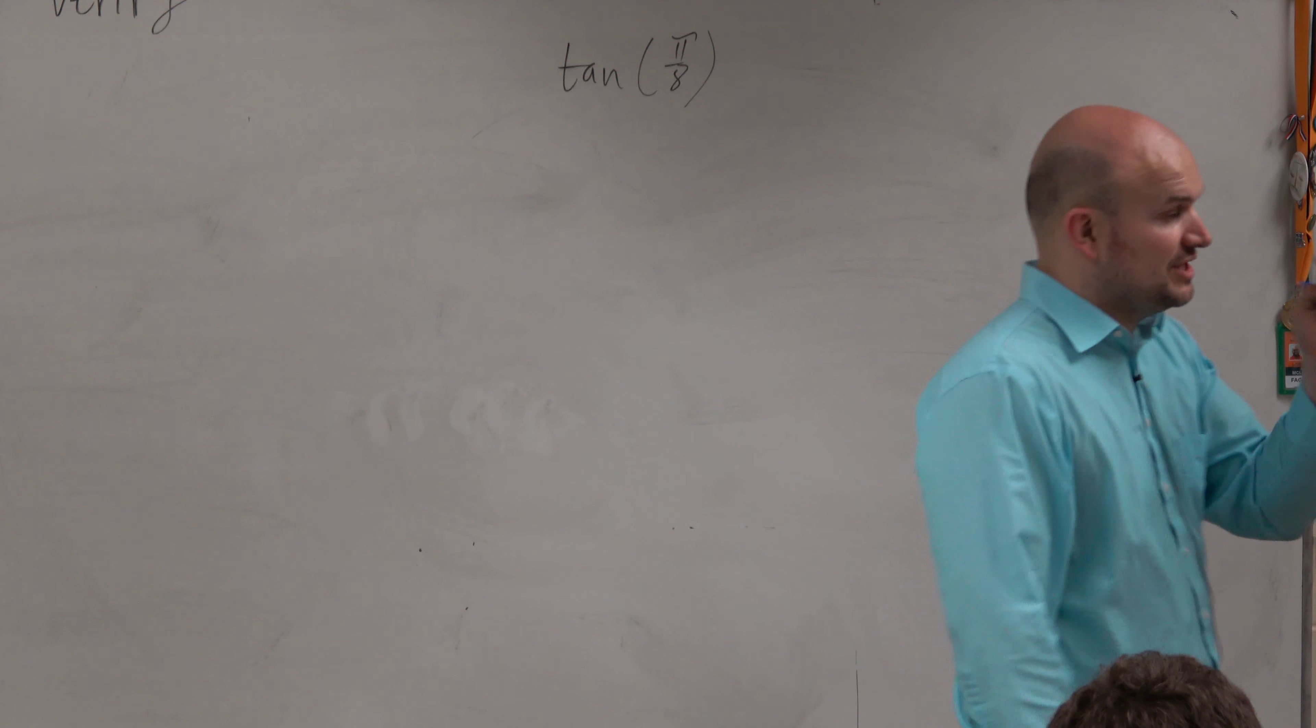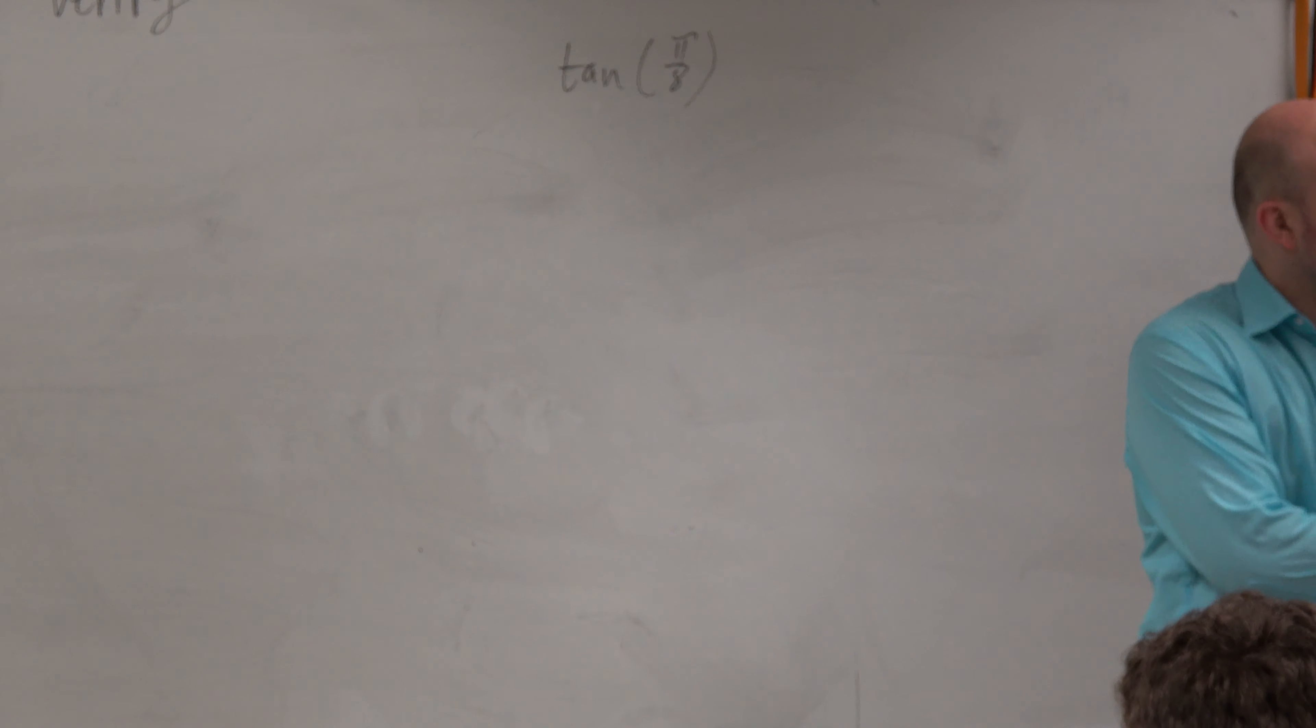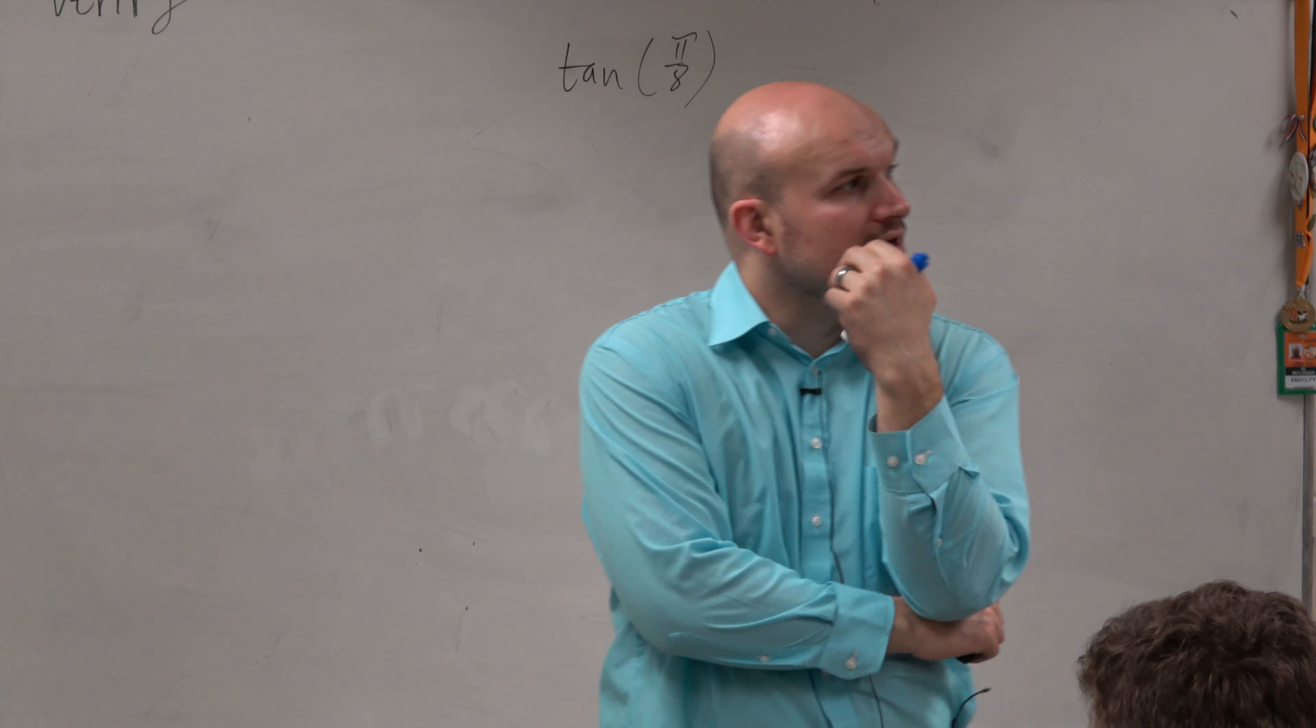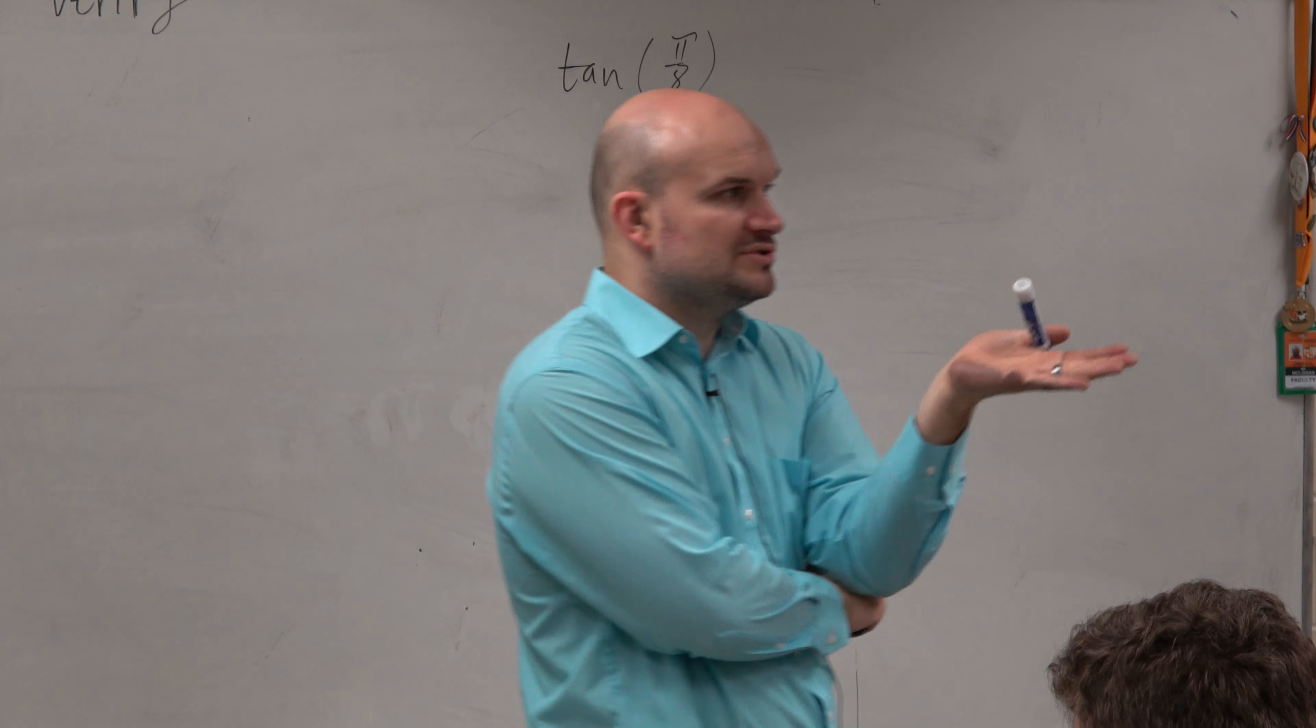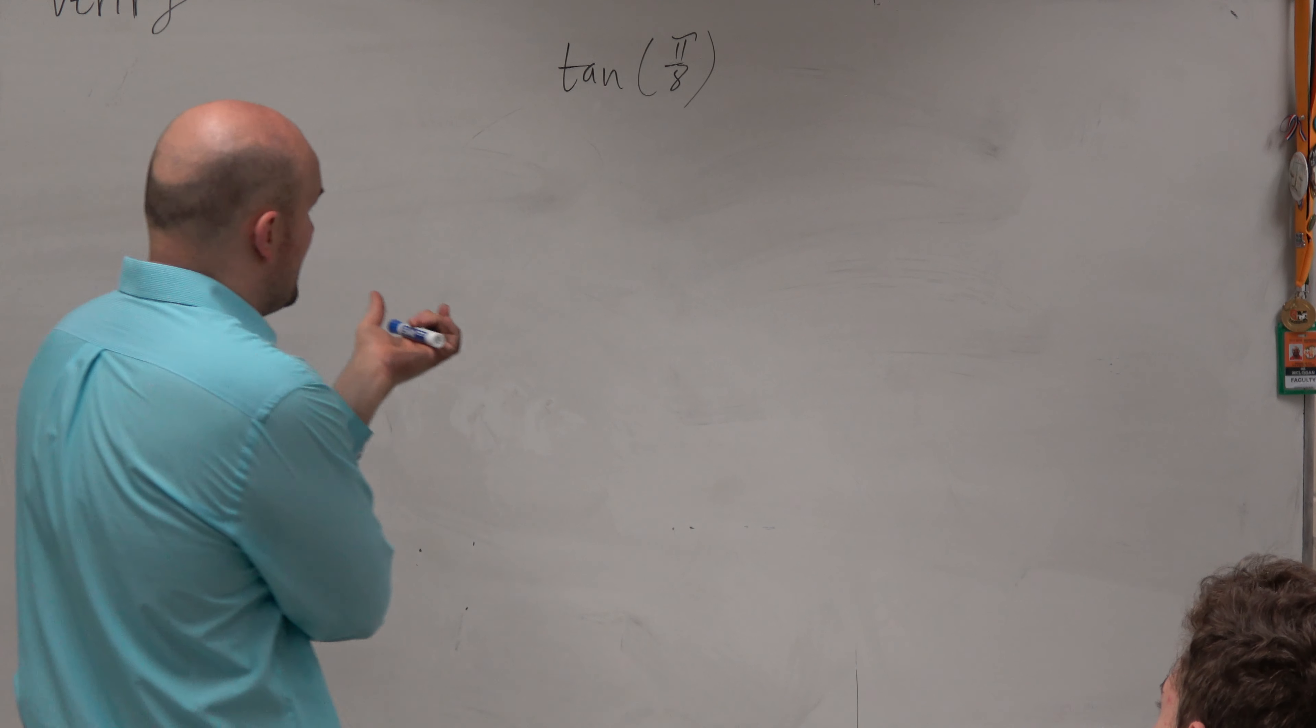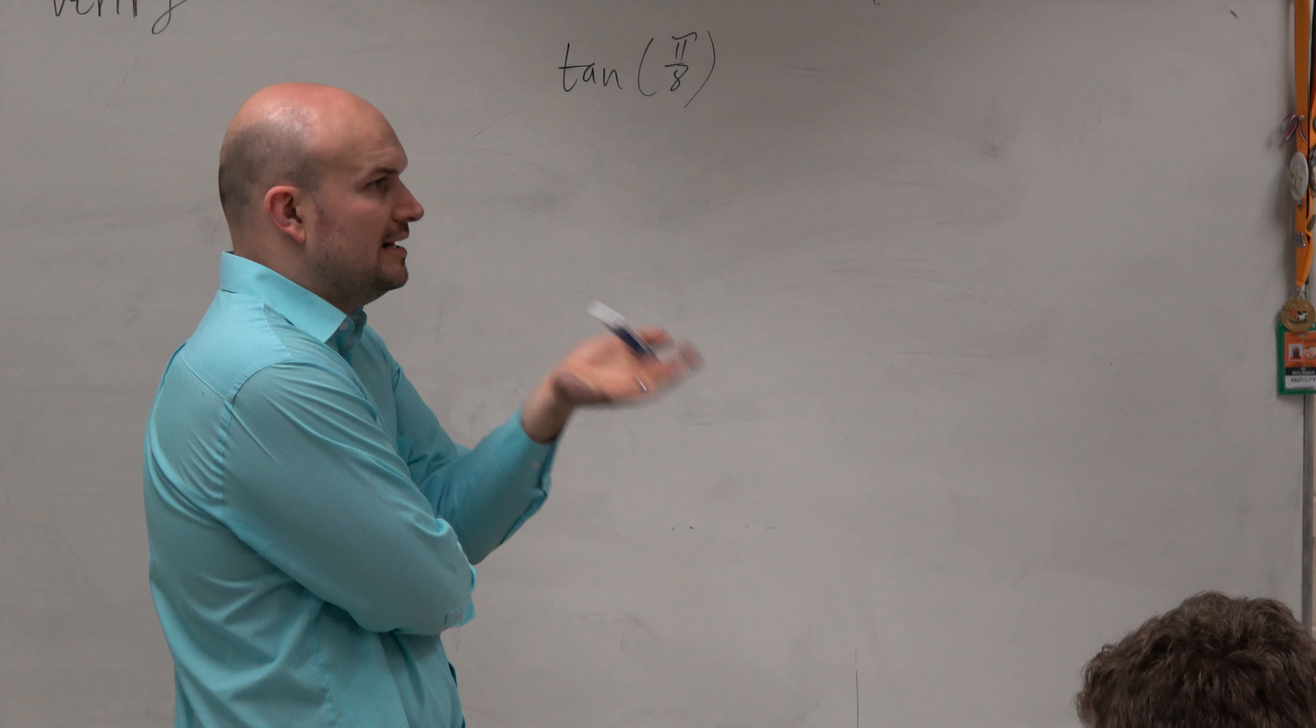For the tangent function, we have 1 minus cosine of theta divided by sine of theta, or sine of theta divided by 1 plus cosine of theta. My recommendation, I usually use the first one where it has a monomial in the denominator, and then go from there.